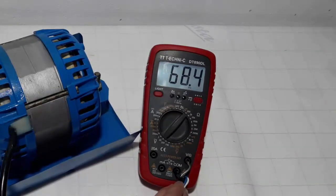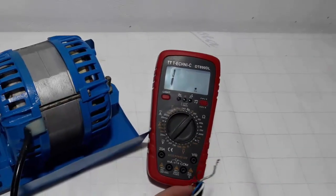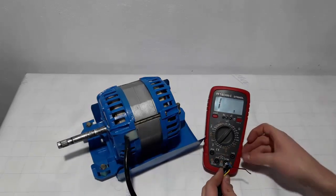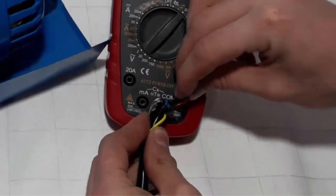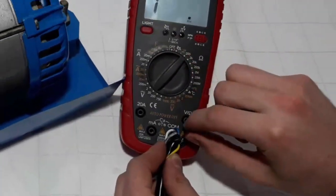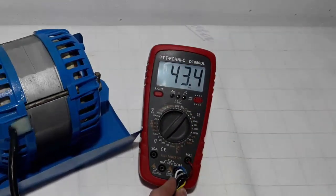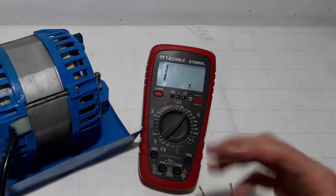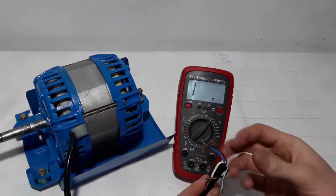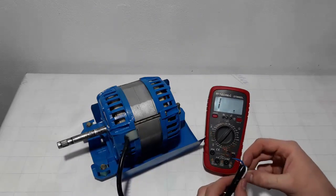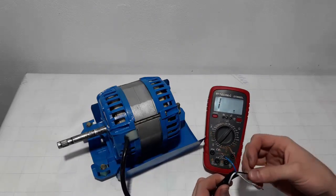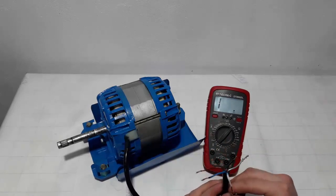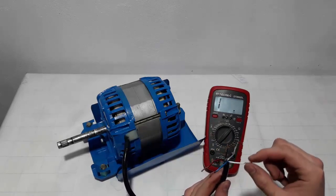When we measure resistance between black and gray wire, we get 68 ohms. Now we measure resistance between blue and red wire and we get 43 ohms, which is smaller than the first resistance. So black and gray wires are for the low speed coil, red and blue are for the high speed coil, and the last wire, the white, is the common.